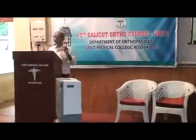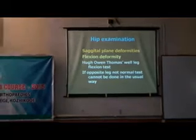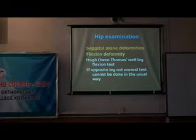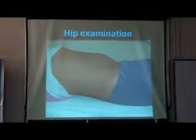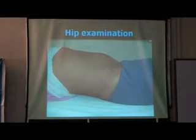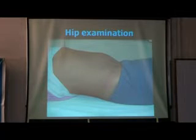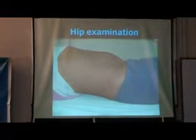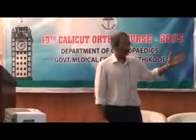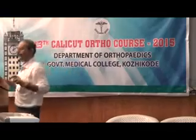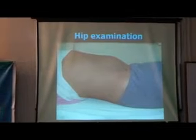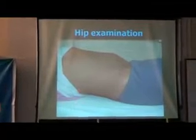If the opposite leg is not normal, this test has a flaw — in a bilateral case it is a completely different examination. In the supine position, start with the lumbar lordosis. To confirm lumbar lordosis, get the patient on a firm surface. Do not put the patient on the floor — most mattresses are firm enough. Normally there is no gap between the bed and the lumbar spine; if there is a gap, the lordosis is exaggerated.